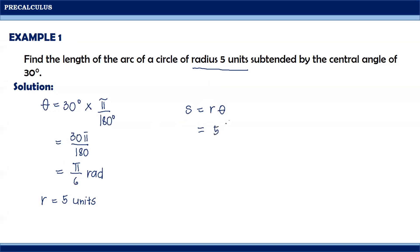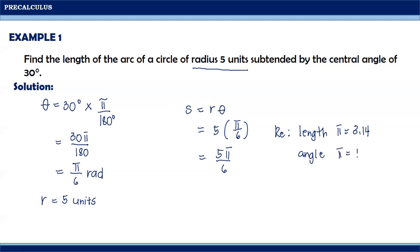Substituting the values, we get 5 times pi over 6, which equals 5 pi over 6. Remember that when we are talking of length, pi should be equal to 3.14. But if we are talking of angle, then pi is equal to 180 degrees. Since s is an arc length, we change pi into 3.14, and the arc length is approximately equal to 2.62 units.